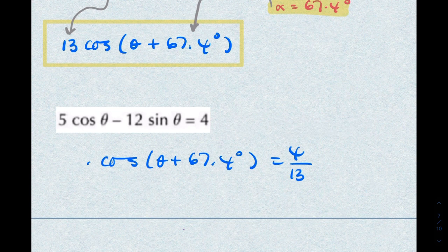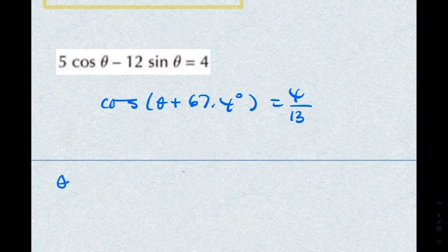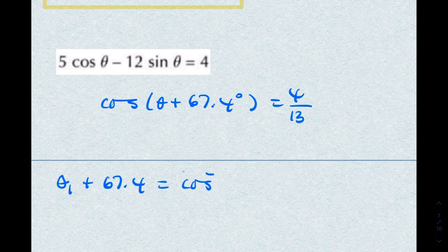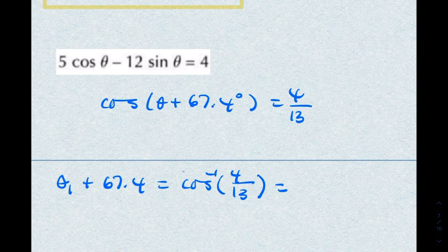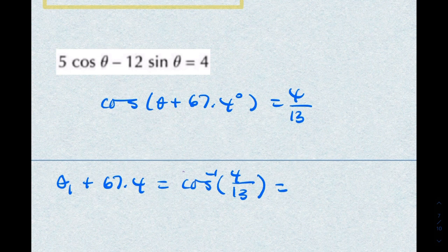Then we can say theta plus 67.4 equals cosine inverse 4 over 13. Making sure your calculator is in radians, that gives you 72.1 degrees.